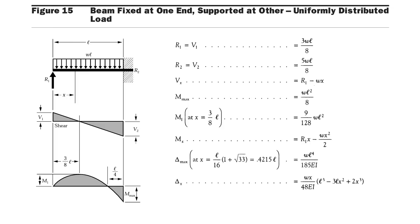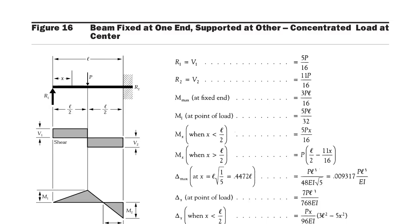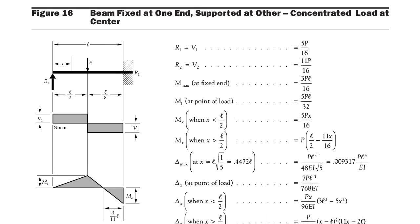The shear force reactions are r1 = 3wl / 8 and r2 = 5wl / 8. Now the next condition: a beam is simply supported at one end and fixed at the other, carrying a concentrated load at the center. What is its deflection and bending moment?